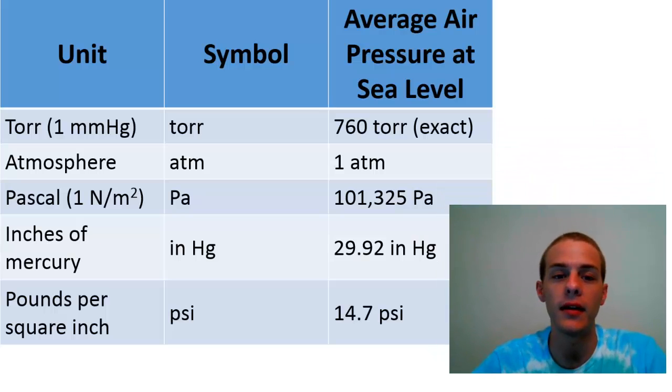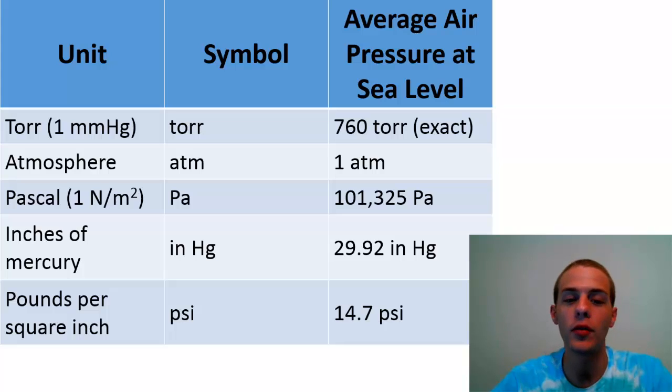To sum all of this up, I got a nice little table for you where we have each unit of pressure, the corresponding symbols, and the average air pressure at sea level in all of these different units. The average air pressure at sea level is exactly 760 Torr, which is also equivalent to one atmosphere, which equals 101,325 pascals, which equals 29.92 inches of mercury, and 14.7 pounds per square inch. All of these units are just units of pressure, the force that gas particles are exerting on the area that is the inside of their containers.